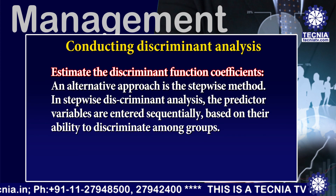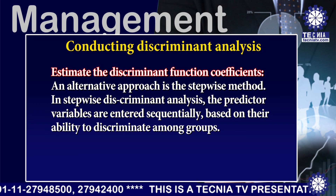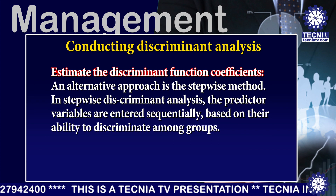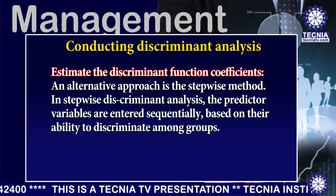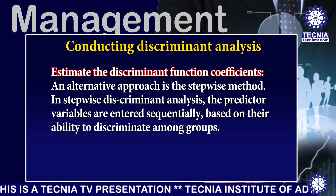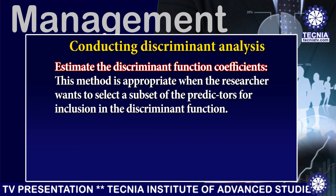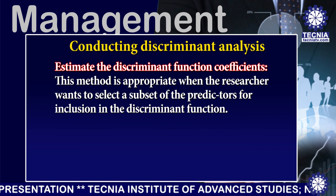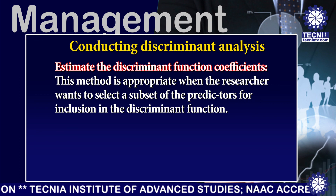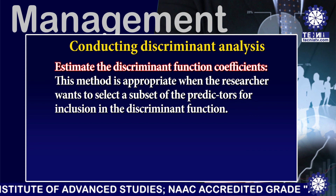An alternative approach is the stepwise method. In stepwise discriminant analysis, the predictor variables are entered sequentially based on their ability to discriminate among groups. This method is appropriate when the researcher wants to select a subset of the predictors for inclusion in the discriminant function.